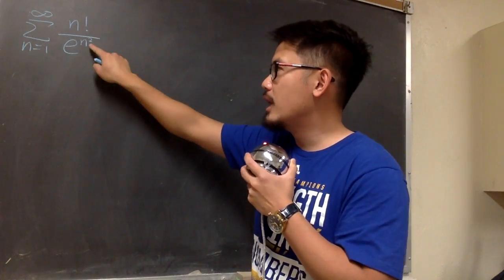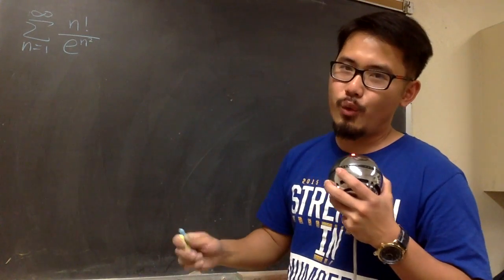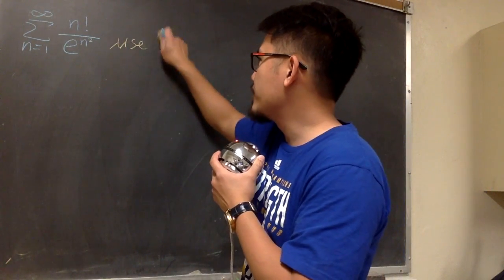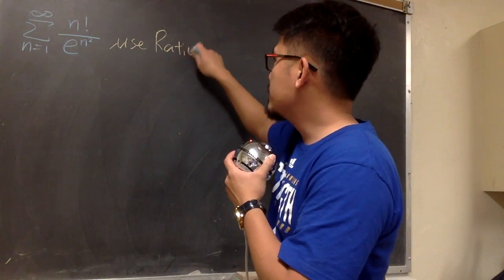We have the factorial, and we have the n in the exponent, so of course, let's use the ratio test. And let me write this down right here for you guys. We will use the ratio test.